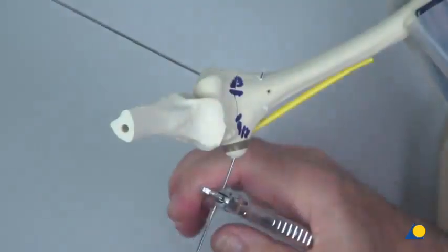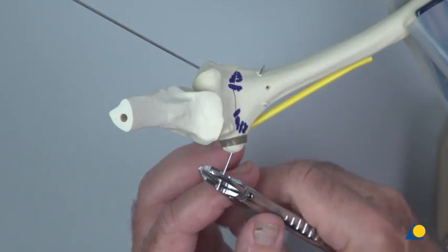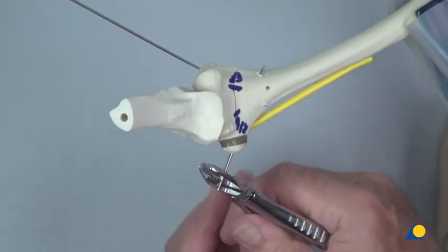The exposed K-wires are trimmed and bent to 90 degrees, taking care not to loosen the wire in the bone.